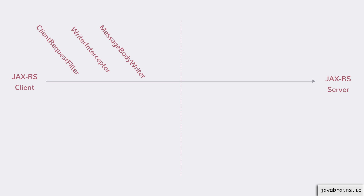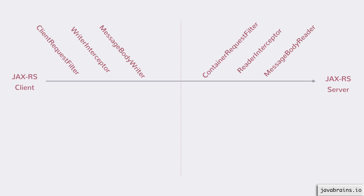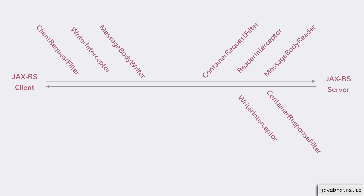With this, the request leaves the client and goes to the server. On the server side, we have the container request filter — the first thing executed — which modifies the request parameters. Then we have the reader interceptor, which intercepts the read action and lets you modify the payload. Then the message body reader converts the payload to your Java instance, which is sent to a resource method on the server. Once the resource method executes, you have a response to send back. The container response filter kicks in first, allowing you to change the response parameters. Then the writer interceptor intercepts the write, and finally the message body writer converts your server-side instance to the response payload, which gets sent to the client.